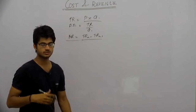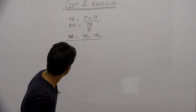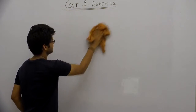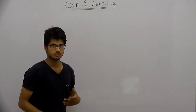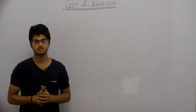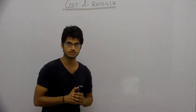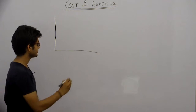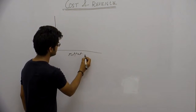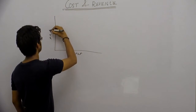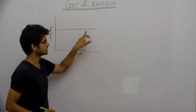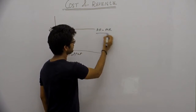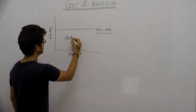Now we will study some graphs and schedules. How the average revenue and marginal revenue curves look in perfect competition — we will draw it here. In a perfect competition market, average revenue and marginal revenue are always the same, so they will be a horizontally straight line where average revenue equals marginal revenue.